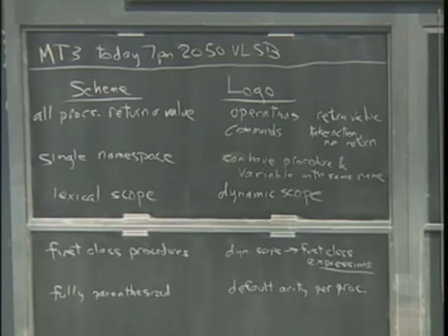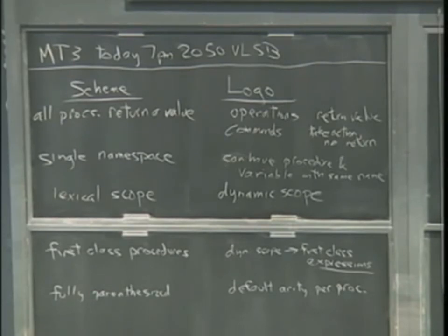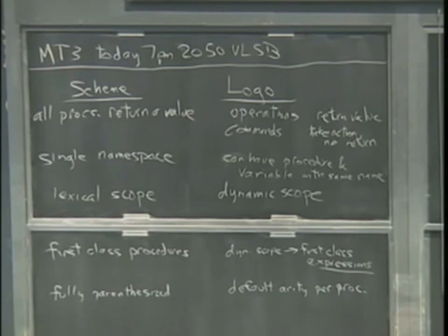In Scheme, you always put parentheses around every procedure call — parentheses are never optional, they always mean something. Usually they mean we're calling this procedure with those arguments. That lets you tell the difference between a procedure name being called and a procedure name being passed as an argument to something like map. If the name has a left parenthesis right in front of it, it's being called; if not, not. In Logo, we don't fully parenthesize things, so to keep straight the difference between arguments and procedure calls, we have to know the arity — how many arguments a procedure takes. Every procedure has a default arity, and some can have variable arity if you use parentheses around the calls, as in Scheme.